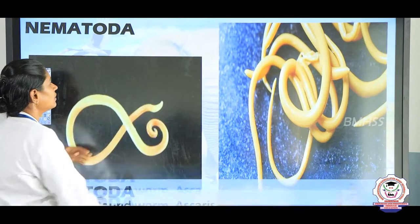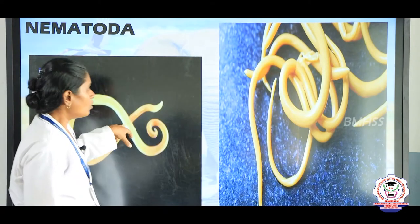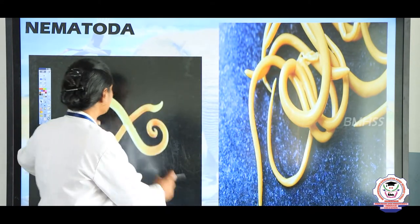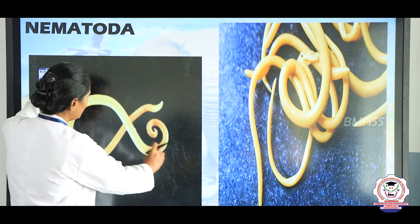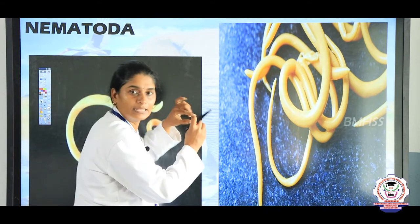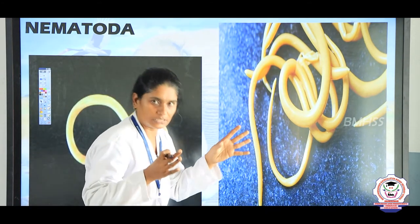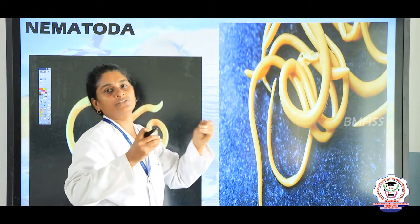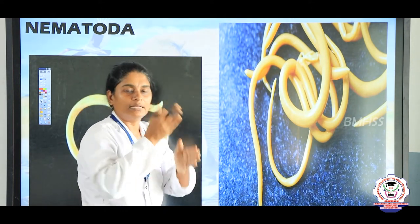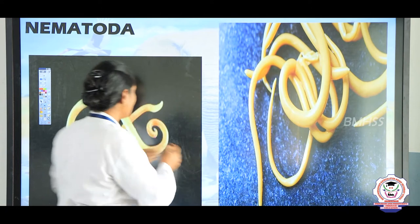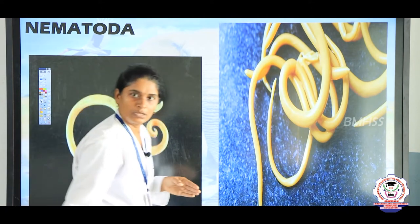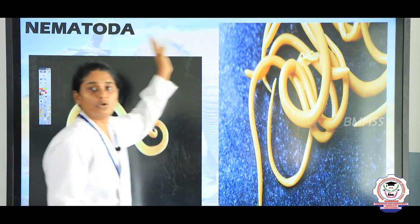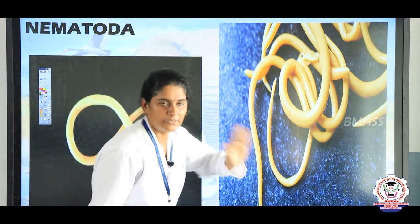Roundworm and Ascaris are cylindrical in shape — they do not have segments and are round in structure with no visible lines on them. Nematoda is also called Aschelminthes.